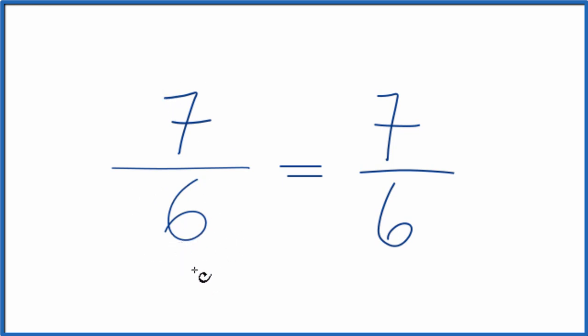So we could write it as a mixed number. Let's do that. So 6 goes into 7 one time with 1 left over, and we bring the 6 across.